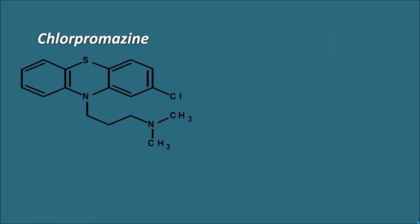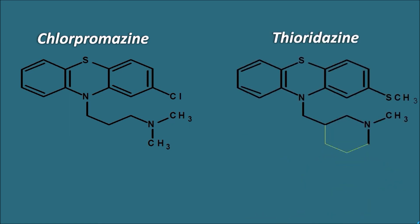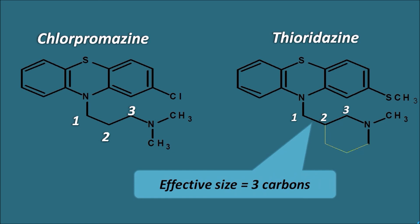Chlorpromazine can form the hydrogen bond because its three-carbon side chain brings the nitrogen close to the chlorine. What about thioridazine? Although thioridazine has a piperidine side chain, it still produces the same effective size — there are also three carbons between the two nitrogens in thioridazine. Even when nitrogen is included in the piperidine ring system, the effective size is maintained so that it can form the hydrogen bond with the group at the second position. In this way, phenothiazines maintain the effective three-carbon size.